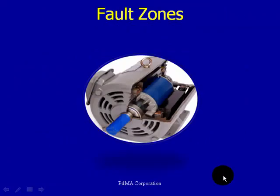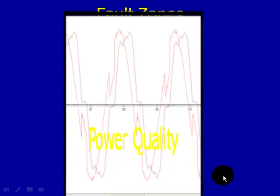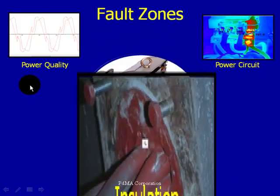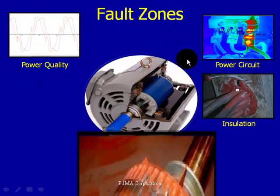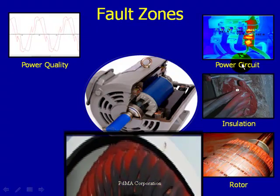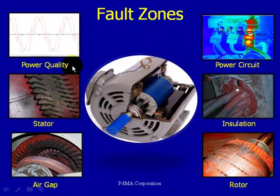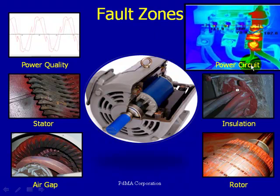This is a series of modules looking at the six fault zones, and today's fault zone is going to be on the power circuit. As a brief overview, the six fault zones are: power quality, power circuit, insulation, rotor, air gap, and stator. Today's in-depth focus will look at the power circuit fault zone.